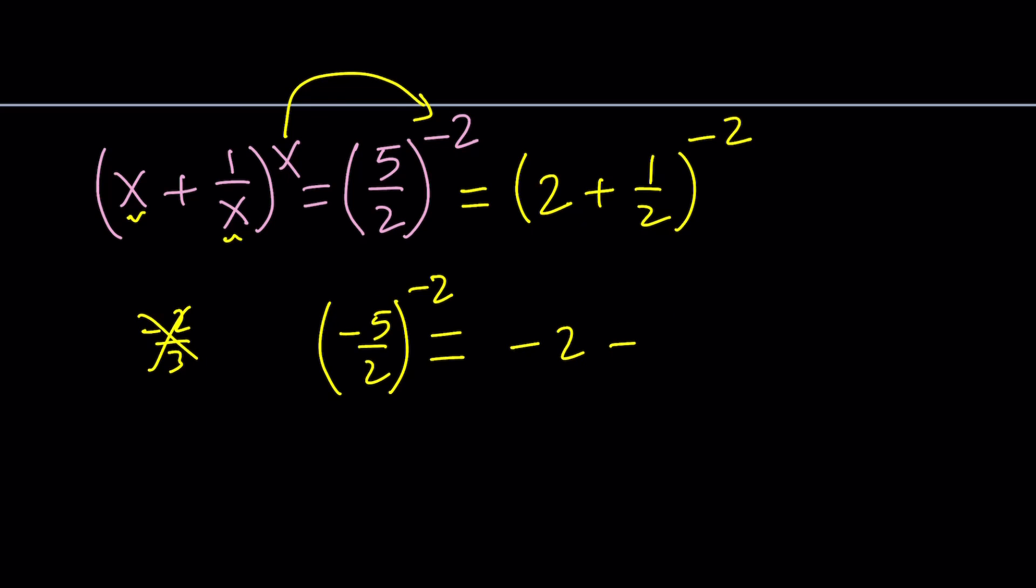But in this case, we are getting what we want because if you set that equal to x plus 1 over x to the power of x, hopefully you see the one-to-one correspondence. x must be negative 2.